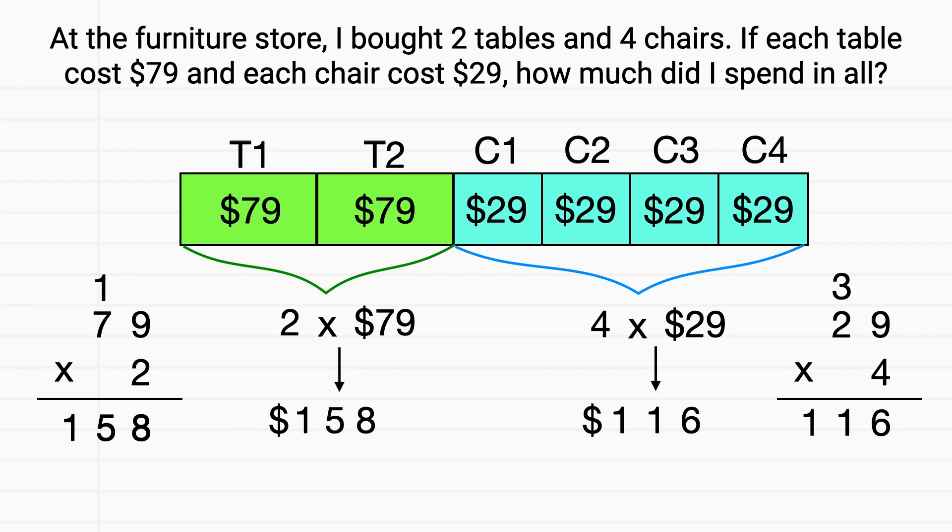Now that I know how much my tables and chairs cost, all I need to do is add together these amounts. If you add $158 plus $116, you get your total of $274.